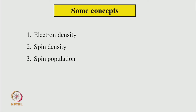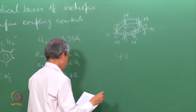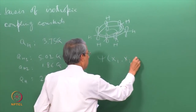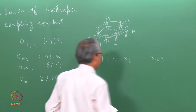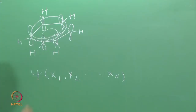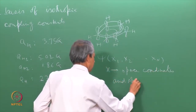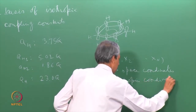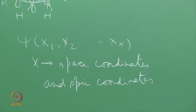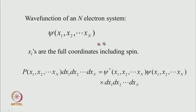So if we have an n-electron system, it is given by a wave function of the kind that has coordinates of all the electrons. This coordinate x includes the space coordinate and spin coordinates — by spin coordinate I mean whether it is alpha or beta spin. This wave function should have all the information we can think of about the system. The wave function for an n-electron system can be written in this fashion, where x_i are the full coordinates.